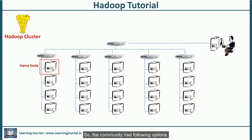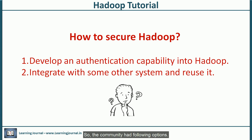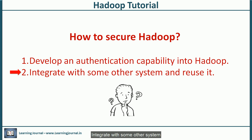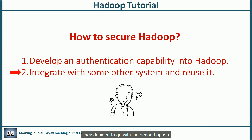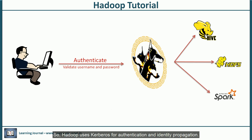So the community had the following options: develop an authentication capability into Hadoop, or integrate with some other system that is purposefully designed to provide authentication capability over a network environment. They decided to go with the second option. So Hadoop uses Kerberos for authentication and identity propagation.